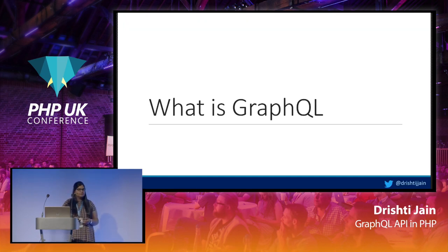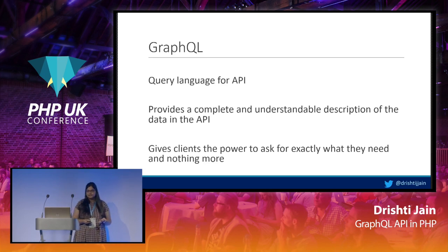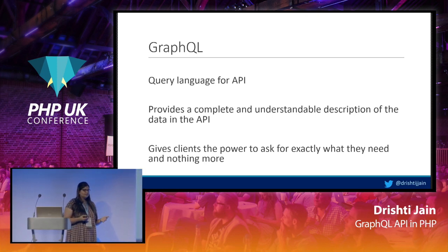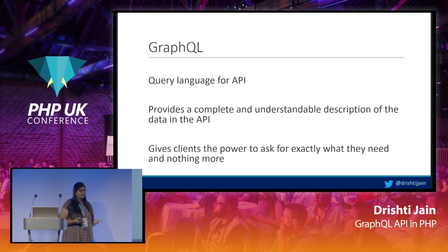Let's directly start on what GraphQL exactly is. GraphQL is an open source data query and manipulation language for APIs. It provides a complete, understandable description of data in the API. Whenever you want to get data from various data sources — a single source or multiple sources — GraphQL comes in very handy. It helps you retrieve data exactly the way you want, without extra effort to reformat it, giving clients the power to get exactly what they ask for.